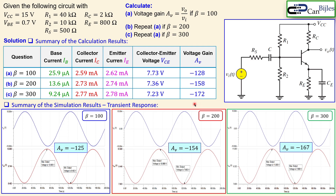That's it for example number three, specifically discussing the bypass capacitor and its effect on gain. We will move on and further improve this circuit to get more stable results in example four. If you have any questions or comments about this example, please let me know and I will try to answer them as soon as possible. See you next time.